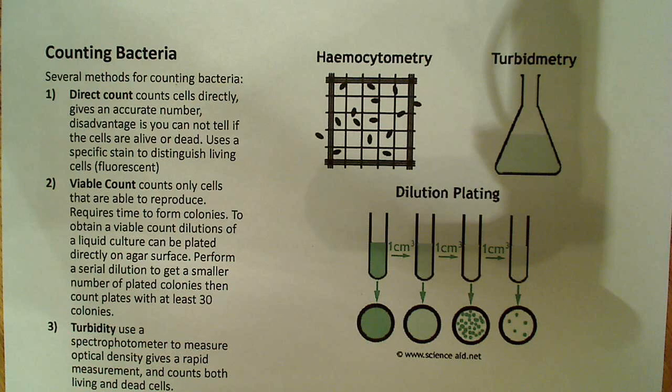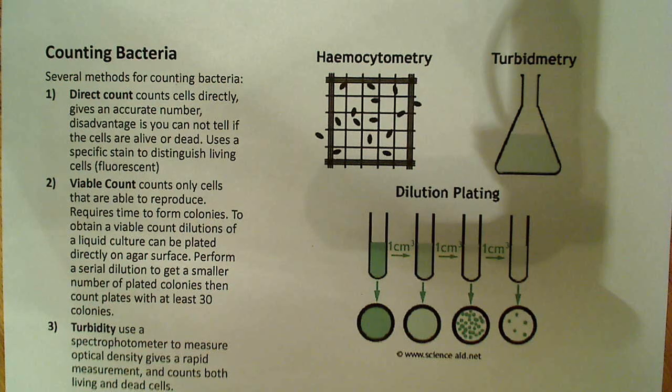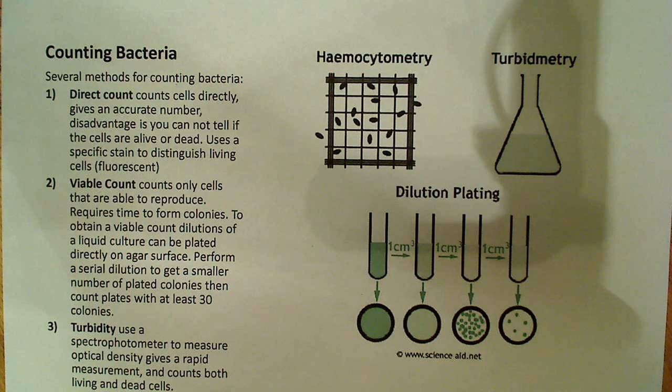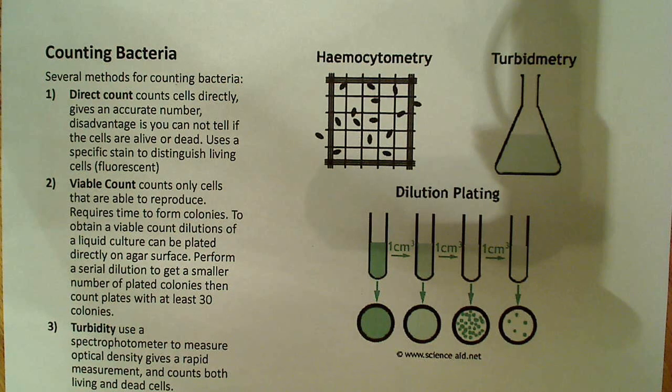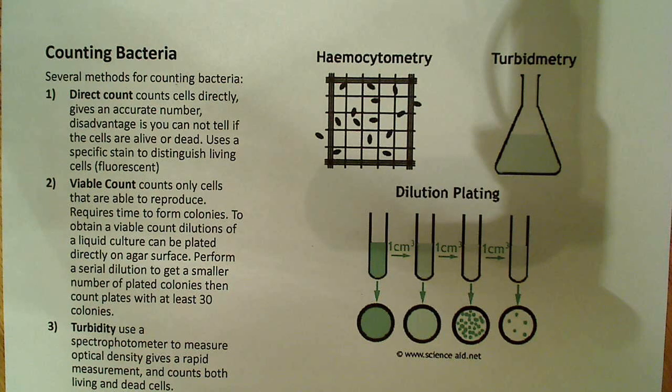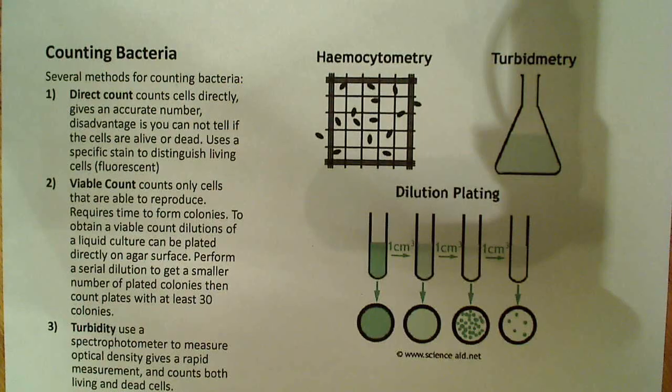But there's a severe disadvantage - you can't tell if a cell is alive or dead. So you may be counting bacteria that is both alive and dead, no longer dividing, in which case maybe you don't want to do that. In some cases it doesn't matter, but in other cases it may matter. It uses a specific stain to distinguish living cells from dead cells. You can do a direct count with a fluorescent stain that allows you to count only the living cells, if that's what you need to do.